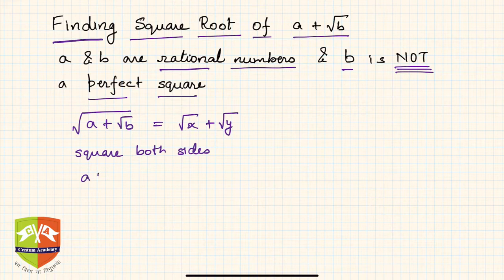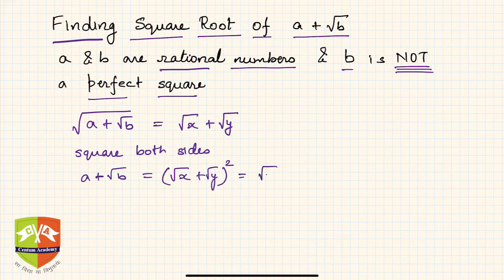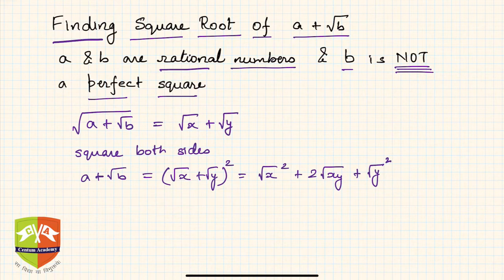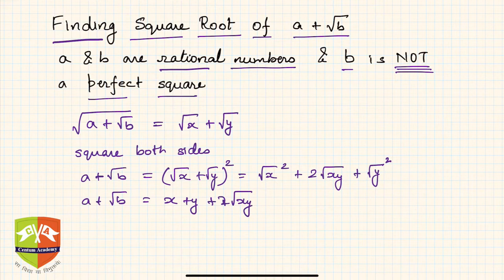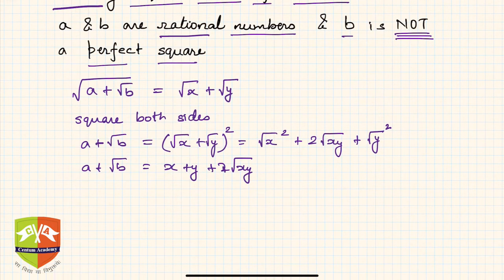Squaring both sides: the left-hand side gives a + √b, and the right-hand side gives (√x + √y)² = x + 2√(xy) + y. So we get: a + √b = (x + y) + 2√(xy).